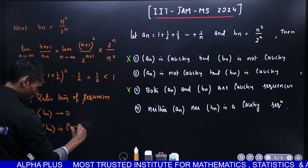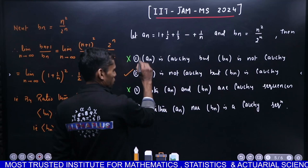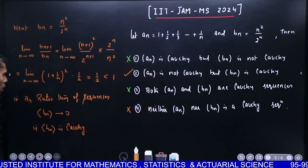So out of AN and BN, BN is Cauchy but AN is not Cauchy. So your second option is correct and the fourth is false. So there is clarity.